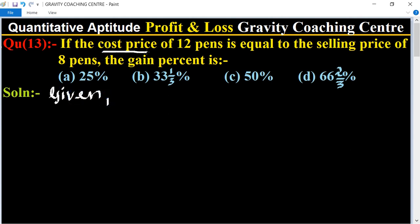Given, the cost price of 12 pens is equal to, means 12 CP equal to selling price of 8 pens, so 8 SP.